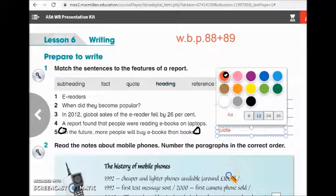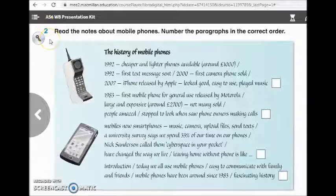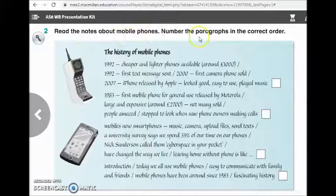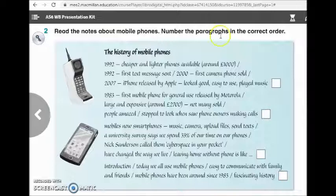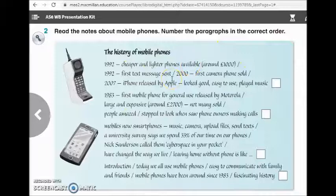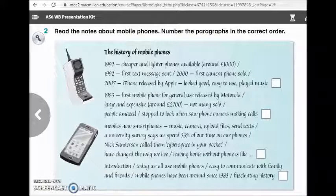Now let's move to the next activity. Activity number 2. Read the notes about mobile phones. Number the paragraphs in the correct order. So here we have notes about mobile phones. Number the paragraphs in the correct order. So I will give you two minutes. Try to do it by yourself. Good job, girls. Now let's do it together.